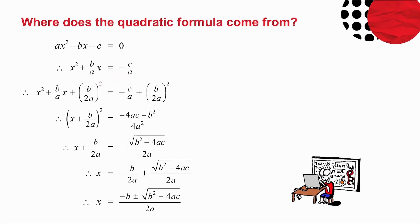Then remember with completing the square we take half the coefficient of x, and half of b over a is b over 2a. So what I do is I add b over 2a squared to both sides.